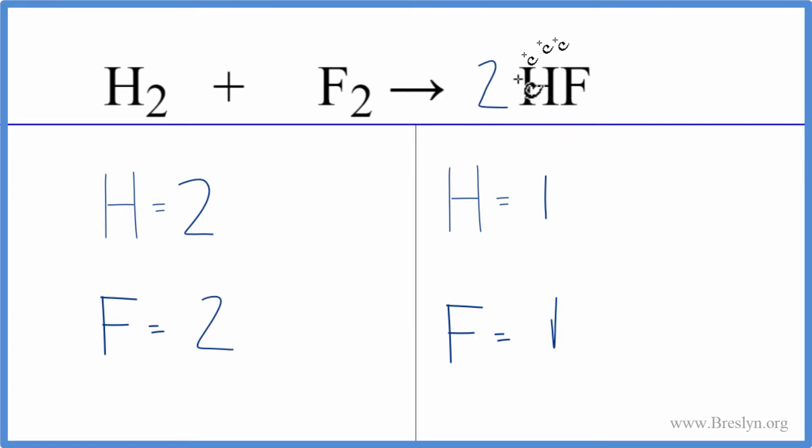This coefficient applies to everything. So we have 1 times 2. That'll give us two hydrogens and then with the fluorine 1 times 2. That gives us two fluorine atoms.